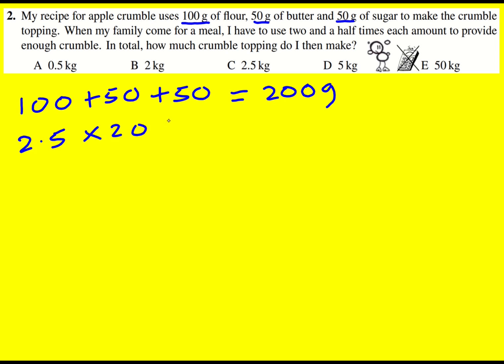And there's lots of different ways you could do it. Two and a half times 200, well two times 200 is going to be 400 and half times 200 is going to be 100. So if I add those together I'll get 500 grams.